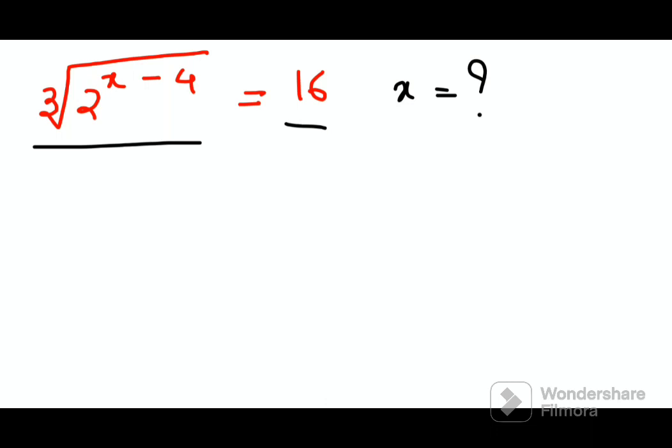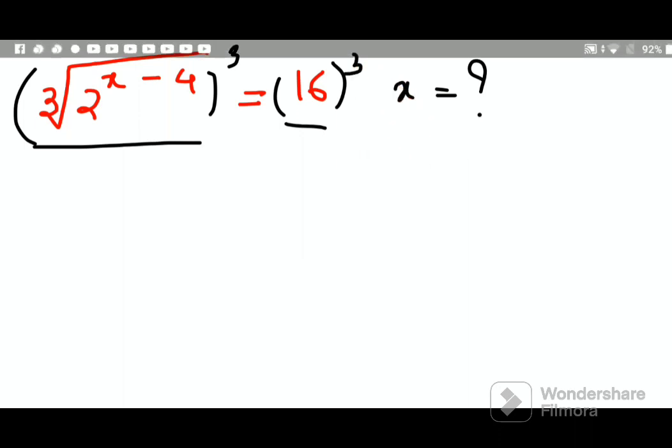So in this case, what we'll do is we'll first cube both these sides. Okay, so this cube and cube root and the cube is getting cancelled, so I just have 2 raised to x minus 4, this is equal to 16 cube.